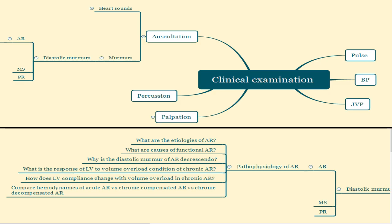So let's mind map today's topic. Under clinical examination, we have auscultation, in which we have a lot of different murmurs, of which diastolic murmurs form a big chunk — aortic regurgitation being one of the most important causes, apart from the mid-diastolic murmur of mitral stenosis and the early diastolic murmur of pulmonary regurgitation. Today I'll be dealing with pathophysiology alone; the murmur details will be in another video.